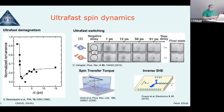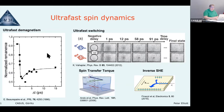This whole field of ultrafast spin dynamics was kicked off in 1996 by the group of Beaurepaire and Bigot in Strasbourg. They took a piece of nickel, hit it with a femtosecond laser, and saw a change in magnetization on the order of femtoseconds — much faster than anyone had anticipated, and much faster than the normal speeds of changing magnetic moments. This kicked off a lot of research, extending to cobalt, iron, gallium, the rare earths, and so on.